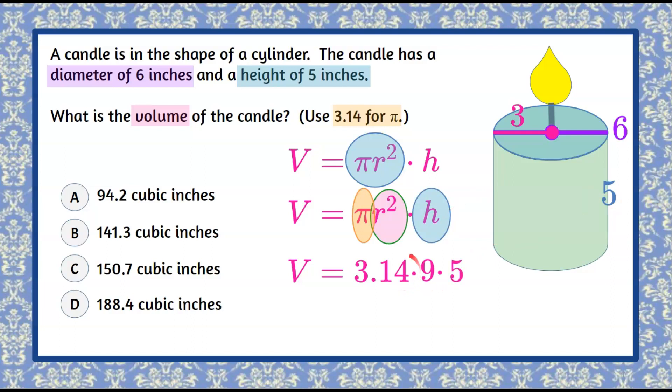So now on your calculator 3.14 multiplied by 9 multiplied by 5 and you're going to get 141.3. We go over to our answers and we see that is answer choice B, 141.3 cubic inches is the volume of our candle.